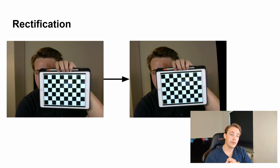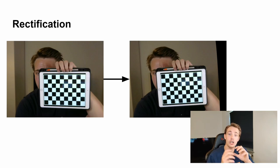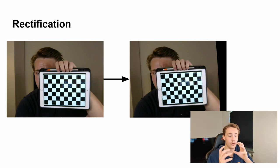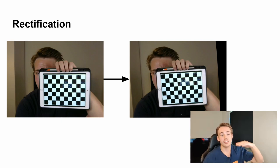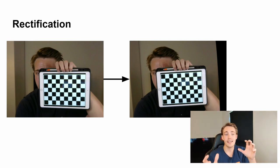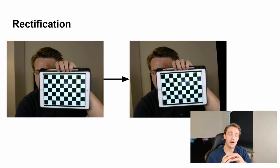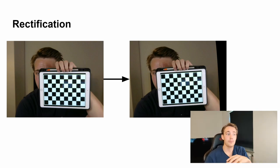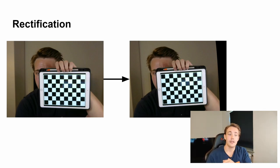After camera calibration we rectify our images to get the cameras 100% aligned. If you want to know what epipolar lines are, I have videos on the channel about that. Epipolar lines are lines we search along to find where the same point appears in both images. When we rectify our images, the epipolar lines become horizontal. Without rectification they can be skewed or tilted, which we don't want for stereo vision.